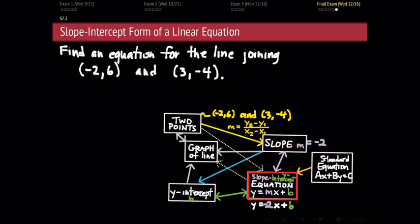How do we find the y-intercept now that we know the slope? We know the coordinates of two points, which means we know a relationship between x and y — actually two different relationships. We also know our equation now has to be y equals negative 2x plus b. To find b, we're going to plug in a point that we know into that equation. If I know x and y and plug them in, the only unknown is b, so I can solve for it.